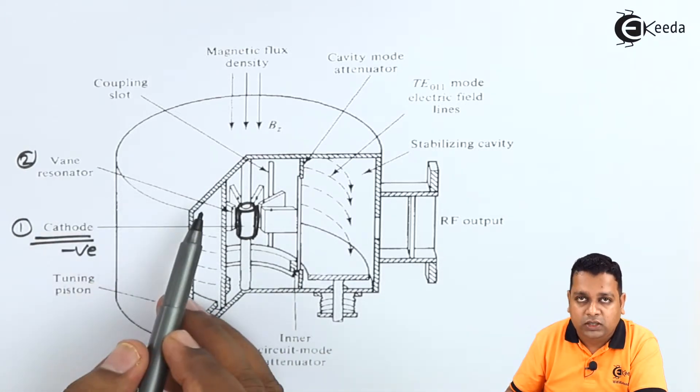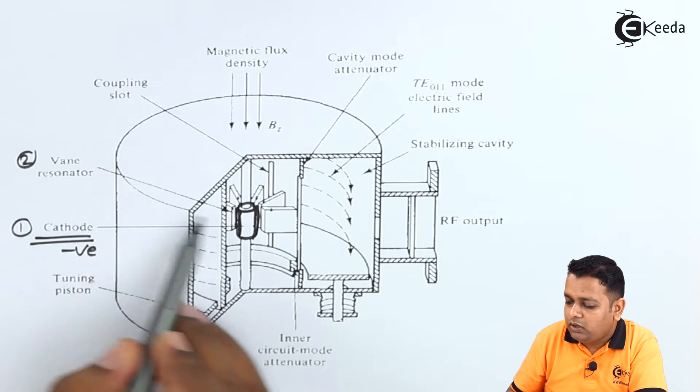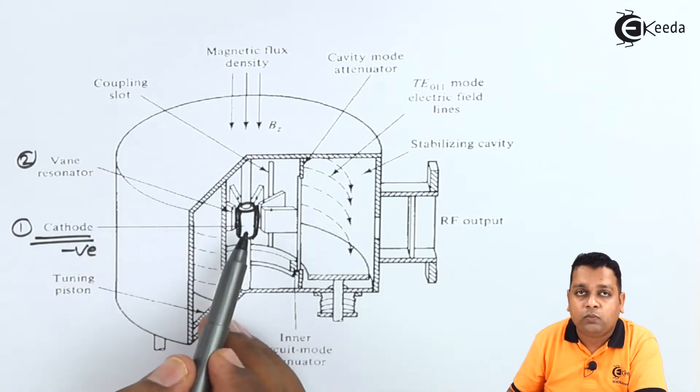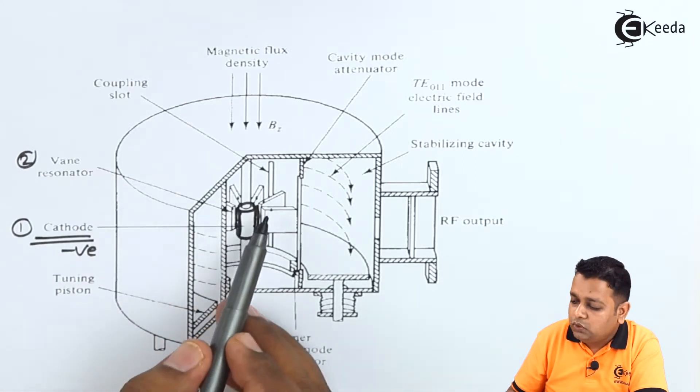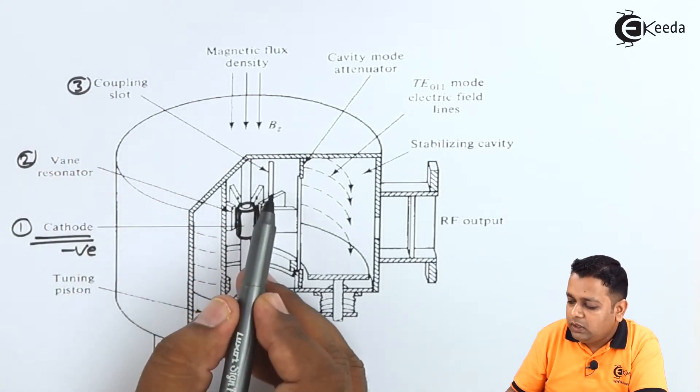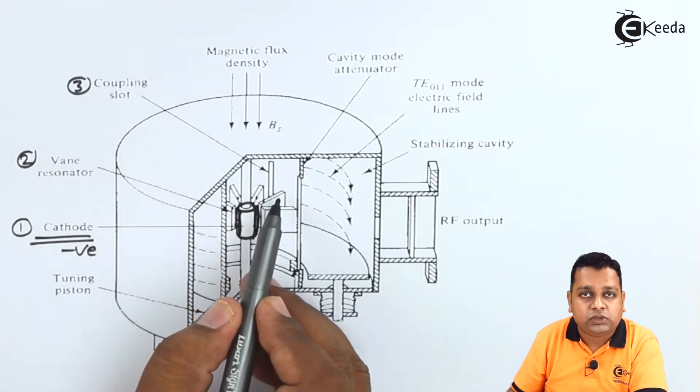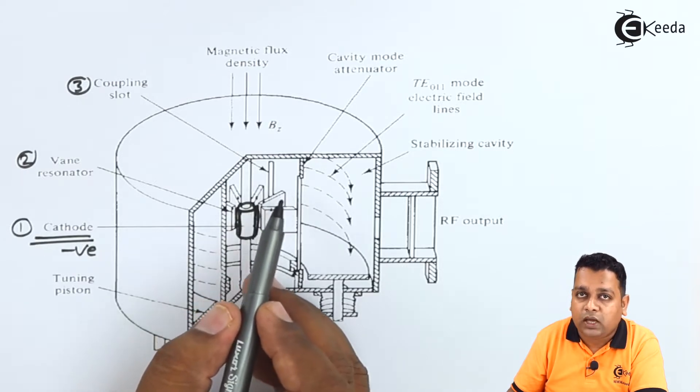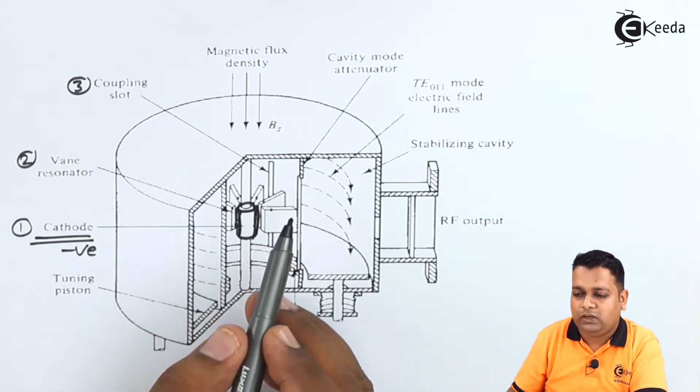After the vane resonator, only one vane resonator we have pointed out. So there are n number of vane resonators. So with the help of coupling slot that you can see in between, there is association of the energy from one cavity to another resonant cavity here.